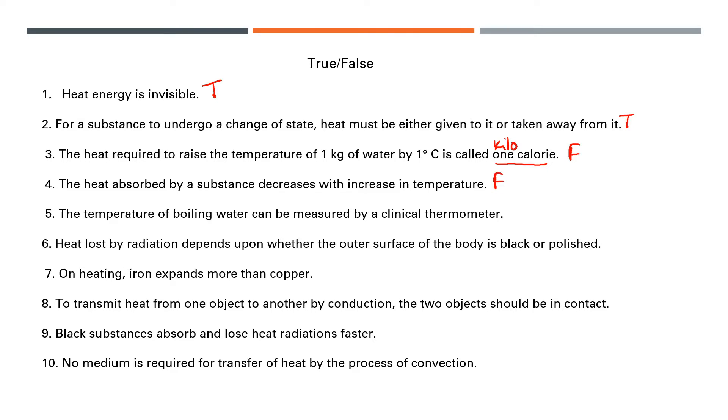The heat absorbed by a substance decreases with increase in temperature. False, it doesn't decrease, it increases. The temperature of boiling water can be measured by a clinical thermometer. No, this is false. We can't calculate boiling water temperature with a clinical thermometer. The maximum is 43 degrees, so this will break.